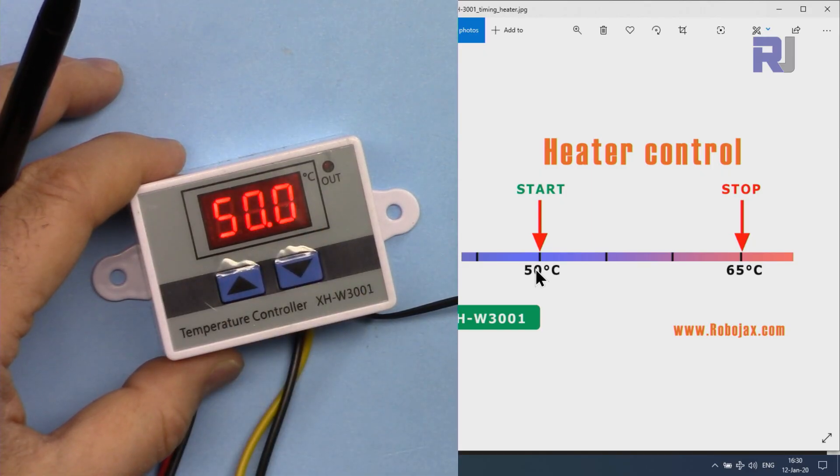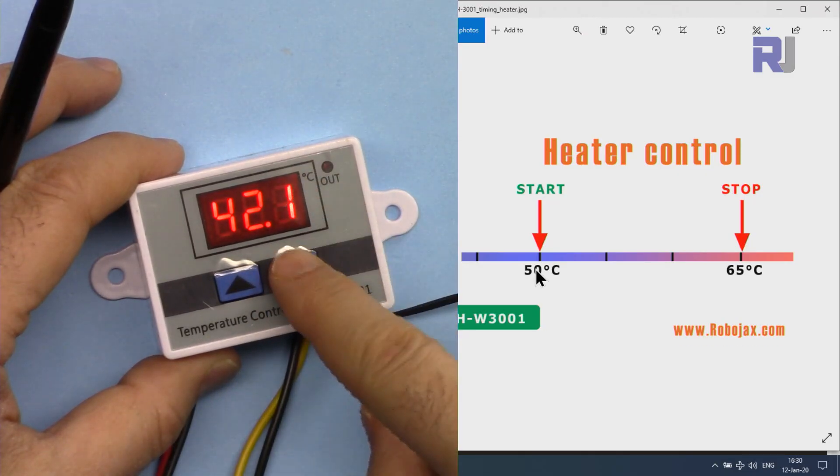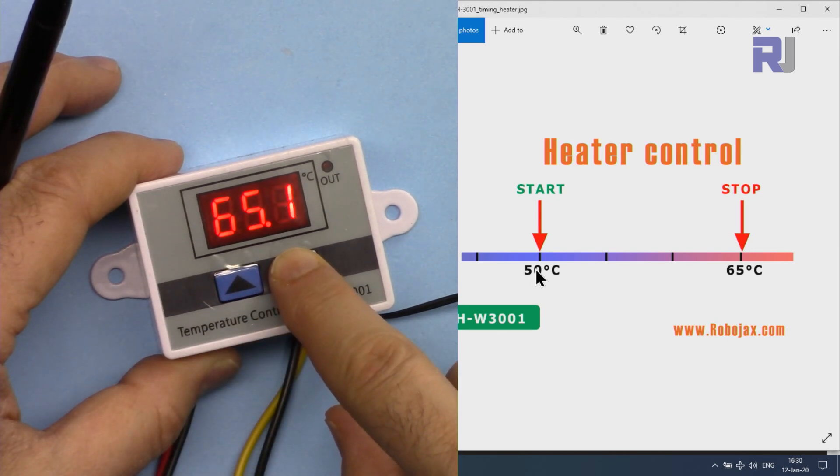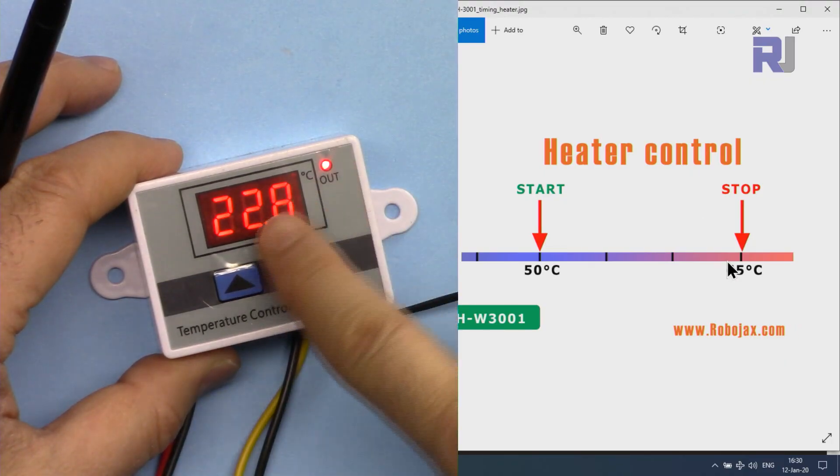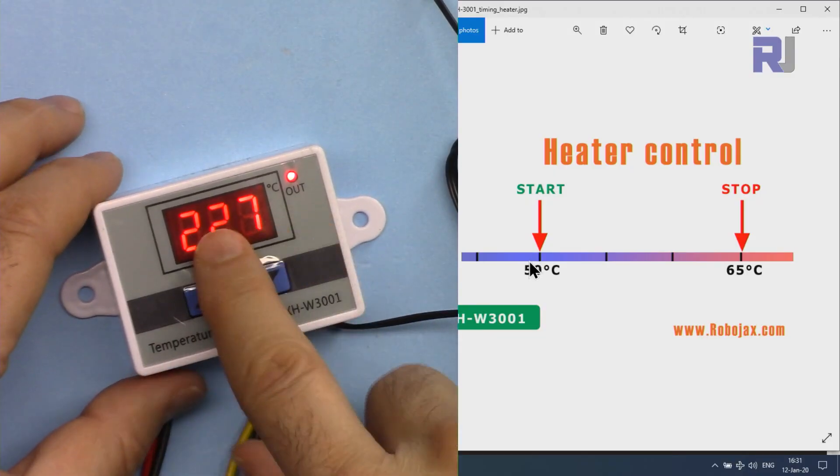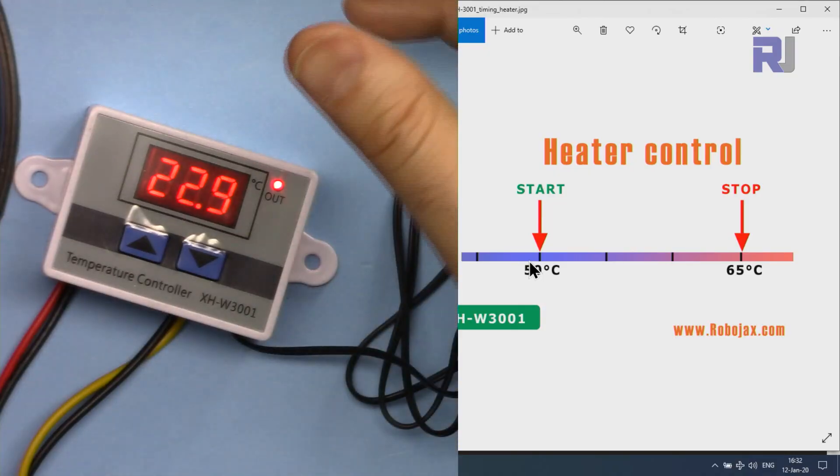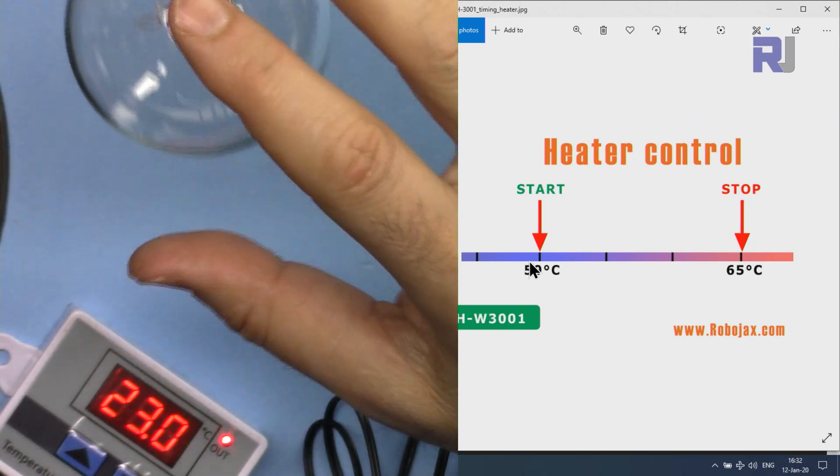And then increase. I'm going to change it to 50. So that is the start temperature. Wait until it blinks and disappears. Now this is for stop. When you see it, if we hold it you can change it. Now I'm changing that to 65. So I've set start 50, stop 65 degrees. And as you can see, because the temperature of the room at the moment is below the 50 degrees of start, the output is on. Now I'm connecting this AC bulb.